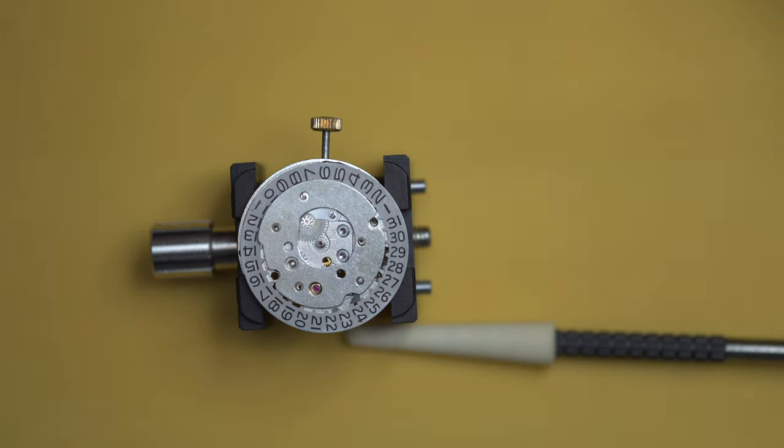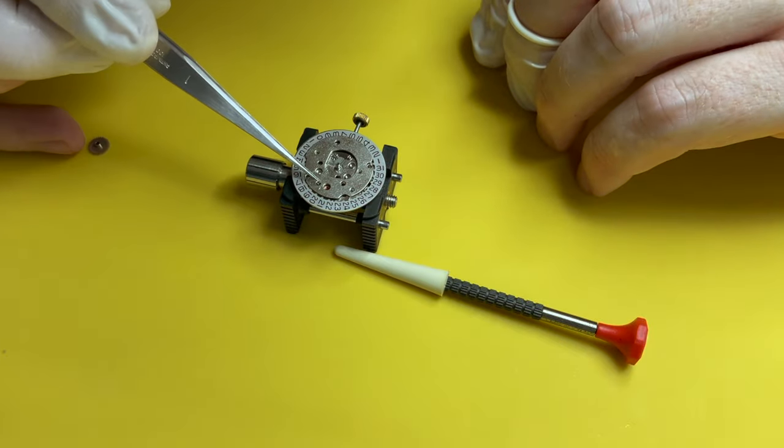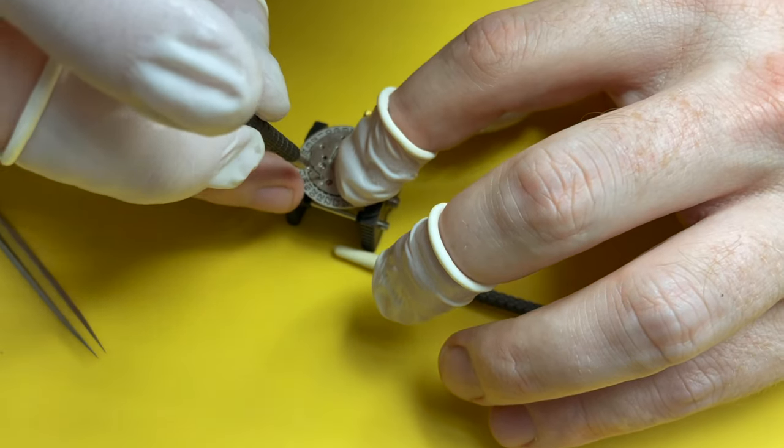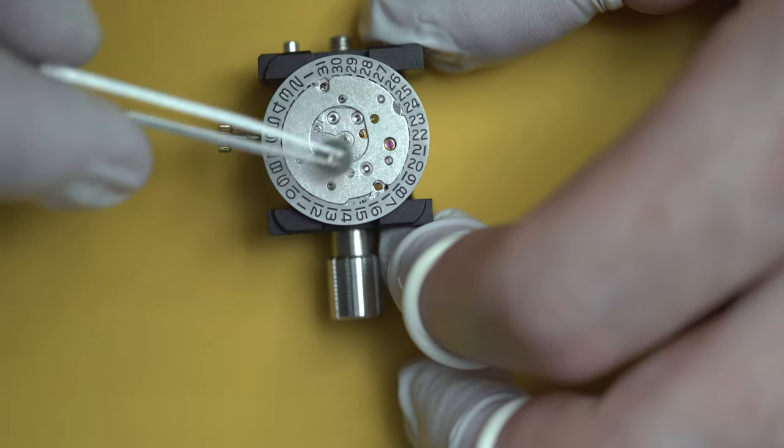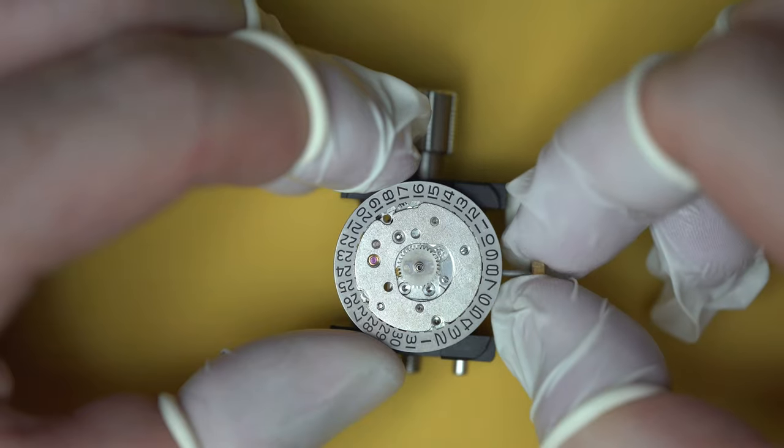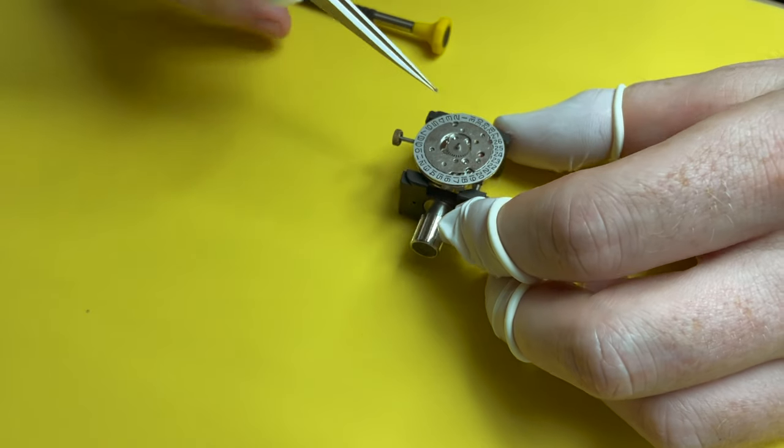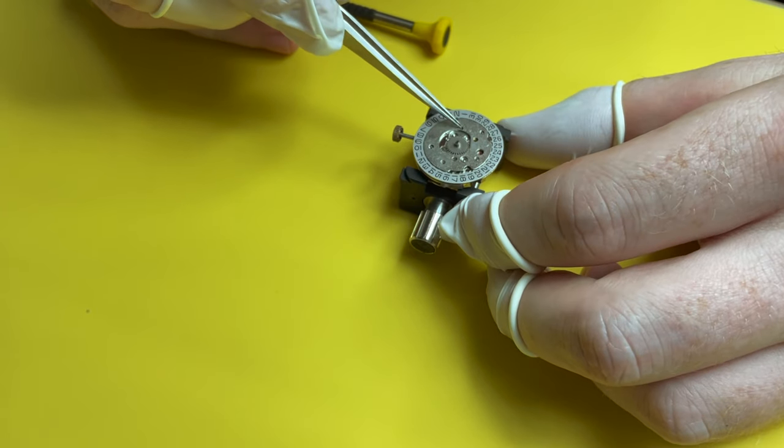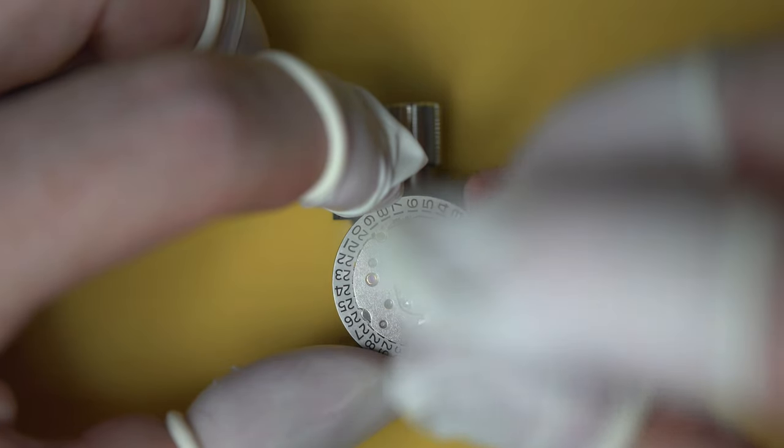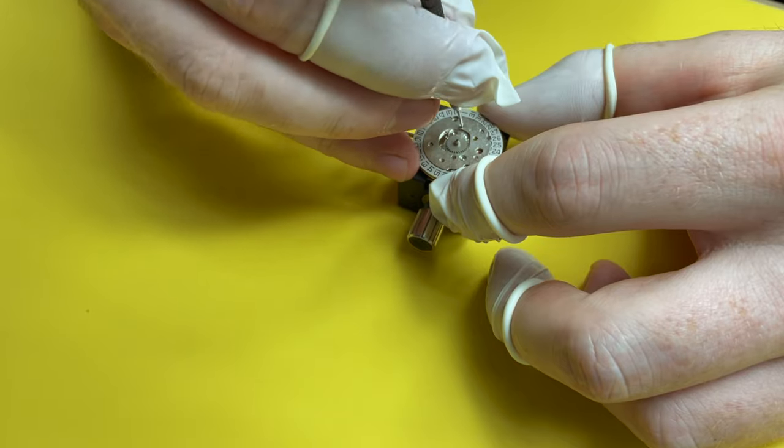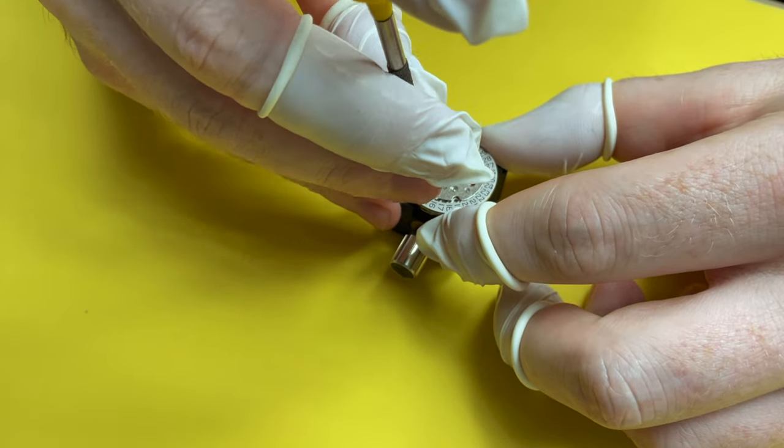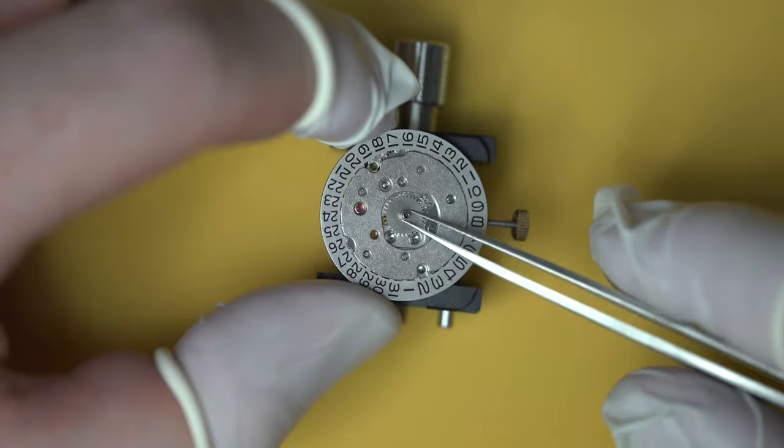But the reassembly is going well. We've got the keyless works back in. We're putting together the calendar complication here. I've just put one screw in just to make sure that everything is engaging. So when I rotated and I pulled the crown out, I changed the time and I was just checking that the calendar flipped over a day, which it did. So now I know that everything is okay. I can screw down this plate, this calendar wheel plate.